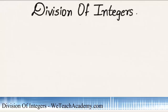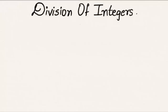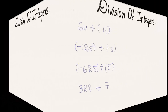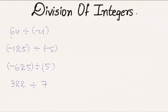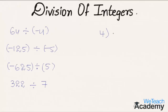Welcome to vdhacademy.com. In this presentation we are going to divide few integers. Coming to the first example: 64 divided by minus 4. We can write this as 64 divided by 4. Here 4 one time is 4, and 6 minus 4 is 2, bringing down the next digit.